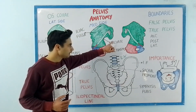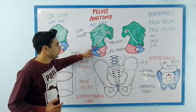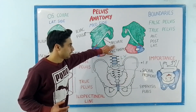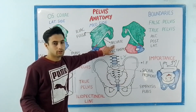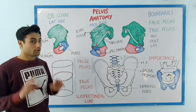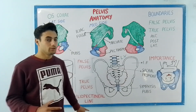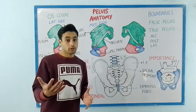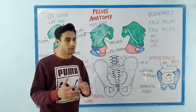The arcuate line continues down into this red line, which is known as the pectineal line. These two lines together — the arcuate line plus the pectineal line — form the iliopectineal line. This is really important because it divides the whole pelvis into two parts. The upper one is known as the false pelvis and the lower one is known as the true pelvis.